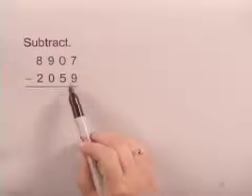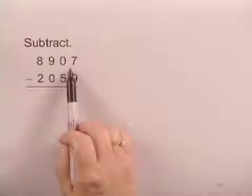In this problem, we're asked to subtract two whole numbers. We're asked to subtract 2,059 from 8,907.